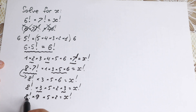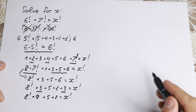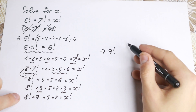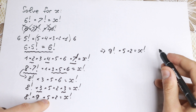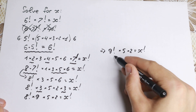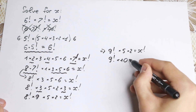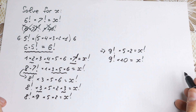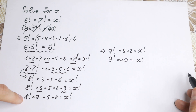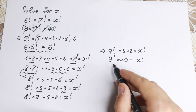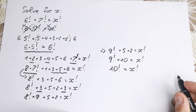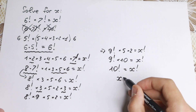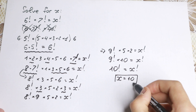Since 9 times 8 factorial equals 9 factorial, we replace that and are left with 9 factorial times 5 times 2. It's easy to see that 5 times 2 equals 10, so we have 9 factorial times 10 equals x factorial. And 10 times 9 factorial equals 10 factorial. Therefore 10 factorial equals x factorial, and x equals 10. That's our answer!